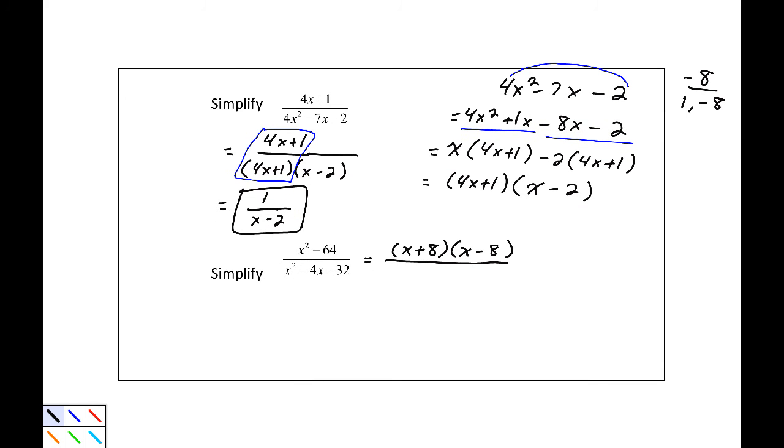Now for our denominator, we need numbers that multiply by negative 32 and add to be minus 4. So that would be x plus 4 and x minus 8. Here I have a common binomial term of x minus 8, a common factor. So that this becomes x plus 8 divided by x plus 4.